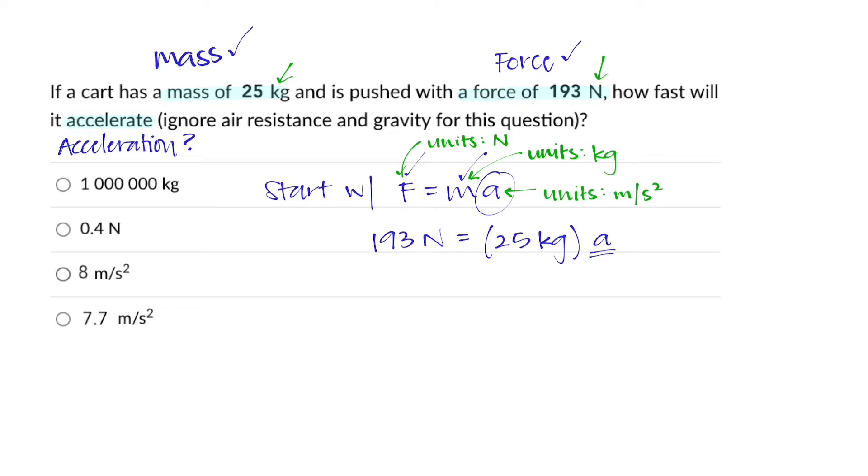The acceleration will be given in units of meters per second squared, only if the force is given in newtons and the mass is given in kilograms. Because we have newtons here, kilograms here, which are the exact units we need, we can ignore them and say that whatever number we end up calculating will give us the units of meters per second squared when we look for the acceleration.